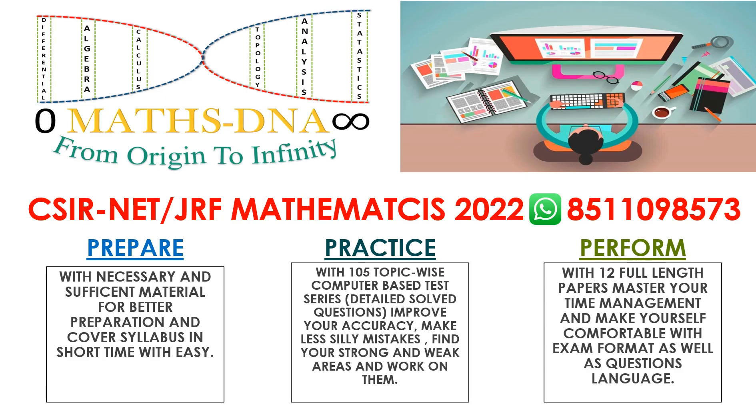We believe that to qualify CSIR-NET, you just need to follow three simple steps. First, prepare with necessary and sufficient material. Second, practice with 105 topic-wise test series given computer-based with detailed solution of each and every question. And thirdly, perform with 12 full-length papers to increase your accuracy and comfort and to understand the language and level of the questions. You can get all this, and for more details you can register at our WhatsApp number provided above.